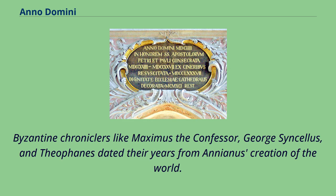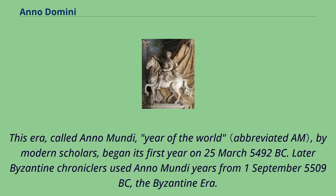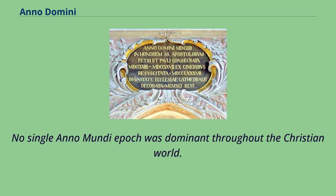Byzantine chroniclers like Maximus the Confessor, George Syncellus, and Theophanes dated their years from Annianus' creation of the world. This era, called Anno Mundi — Year of the World — by modern scholars, began its first year on the 25th of March 5492 BC. Later Byzantine chroniclers used Anno Mundi years from the 1st of September 5509 BC, the Byzantine era. No single Anno Mundi epoch was dominant throughout the Christian world.